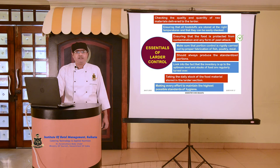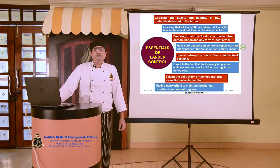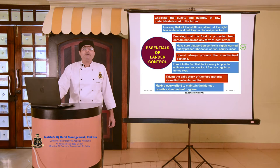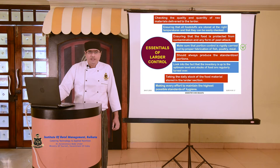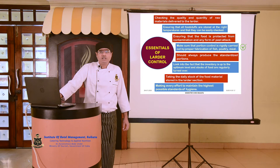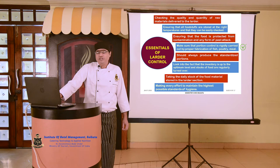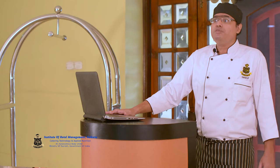Ensuring that food is protected from contamination and any form of pest attack, which will again lead to improper yield. Portion control must be rigidly carried out by proper fabrication of fish, poultry, and meat. Meat and fish are not only high-risk items but also take away a great percentage of the cost. If due to improper fabrication the chef provides 10 grams per portion of meat extra, then after service of 100 portions, it will be almost a kilo of meat going away with no cost return, which will highly reflect in the final food cost percentage.